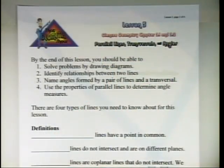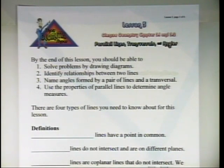Today's lesson is going to correspond with your Glencoe Geometry Textbook, Chapter 3.1 and 3.2. By the end of the lesson, you should be able to: number one, solve problems by drawing diagrams; number two, identify relationships between two lines; number three, name angles formed by a pair of lines and a transversal; and number four, use the properties of parallel lines to determine angle measures.